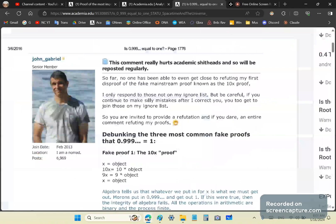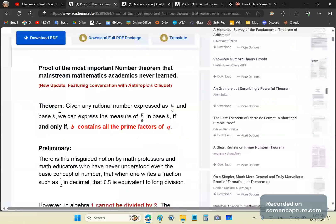So what does it say? I'm not going to go through it in great detail because I'll place a link to the article and you can study it. It says that given any rational number expressed as P over Q and base B, we can express the measure of P over Q in base B if and only if B contains all the prime factors of Q. You'll notice that this is not taught anywhere in the mainstream. They just don't know about it, and those who do dismiss it because they don't really understand it and they've been trained and educated to believe otherwise.